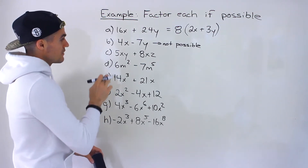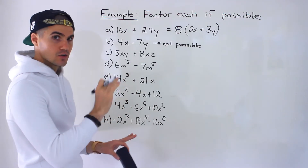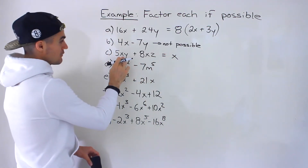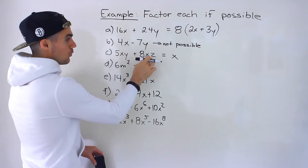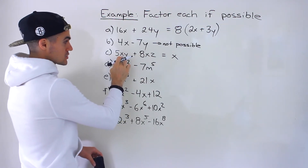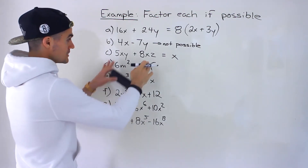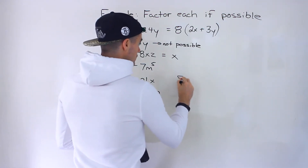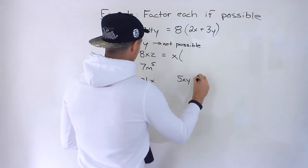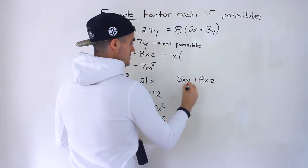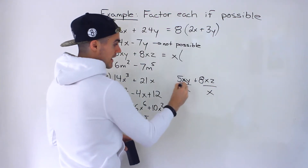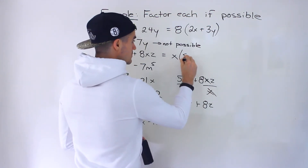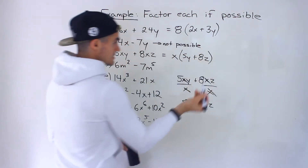Part C: 5xy plus 8xz. The numbers 5 and 8 have no common factor. However, both terms contain an x, so we can definitely take out an x. Notice one term has a y and the other has a z, so we can't take those out. Dividing both expressions by x, the x's cancel, and we're left with x(5y + 8z).